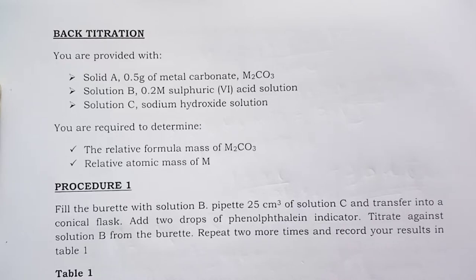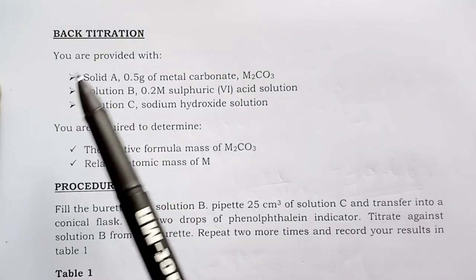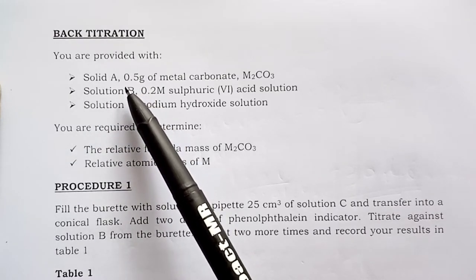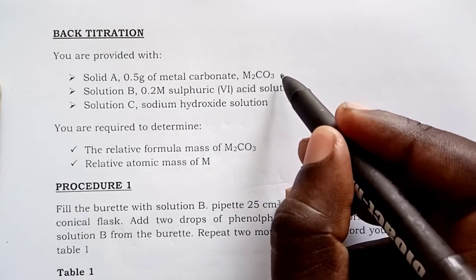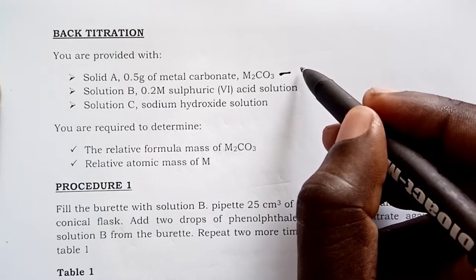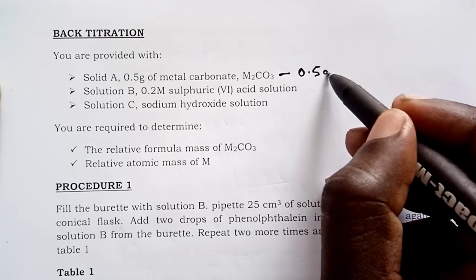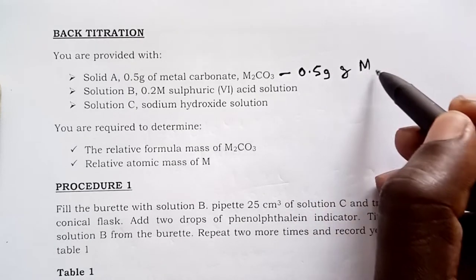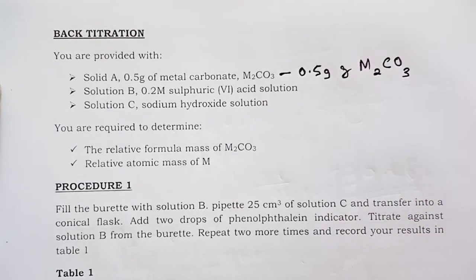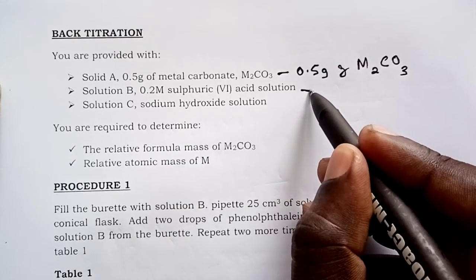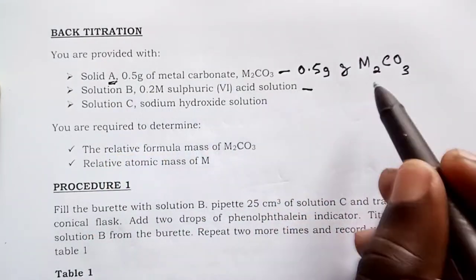We want to dedicate another video to tackle back titration once again. Here, we are provided with solid A, which is 0.5 grams of metal carbonate M₂CO₃. It's always good to have a summary of what is happening with the substances given, so that you have a better understanding of the titration experiment.